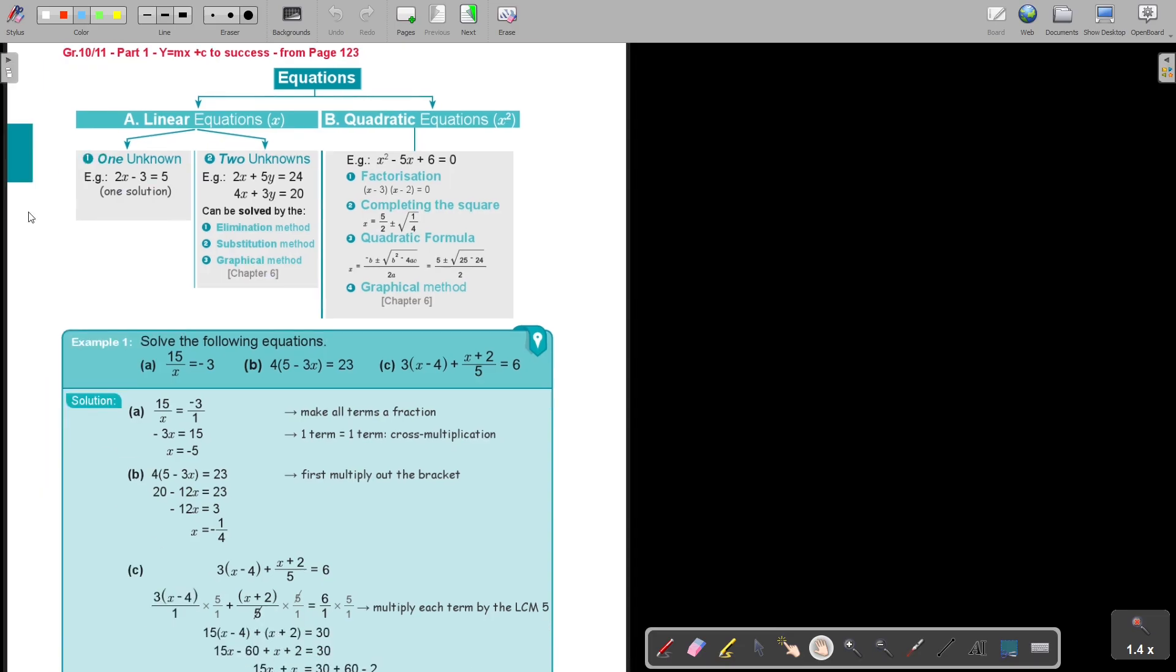Let's first look at the summary from the textbook of the different equations. You can find linear equations where there's just one unknown. Then you can find two unknowns when there's an X and a Y in the same equation. Then you need to have two equations. And then we will also look at quadratic equations, which we can solve by factorization, completing the square, or the quadratic formula, or the graphical method, which we will first do in chapter 6 on graphs.